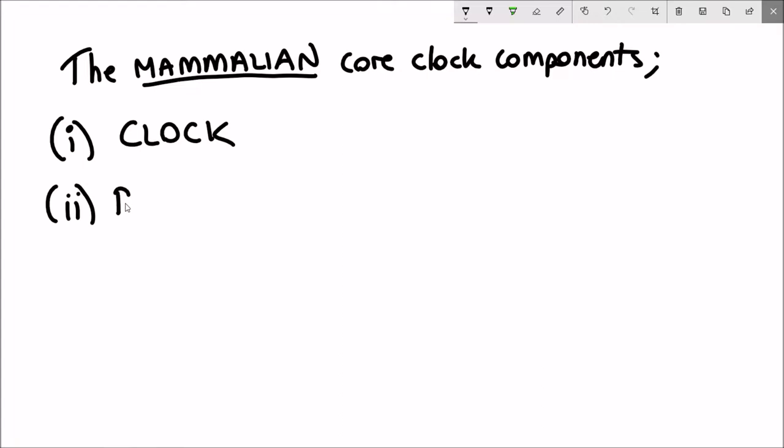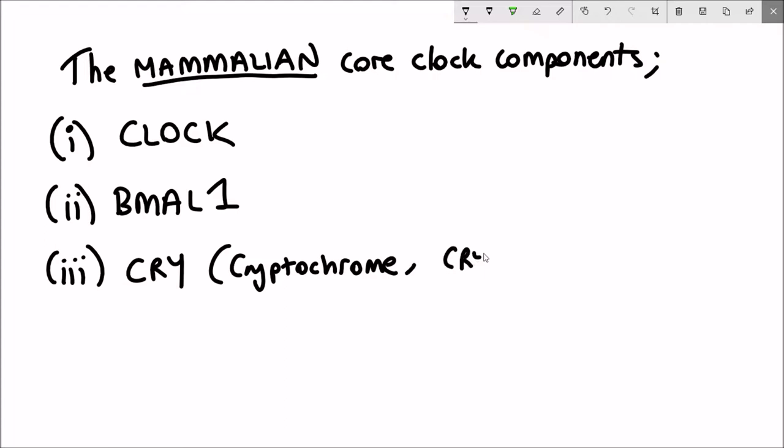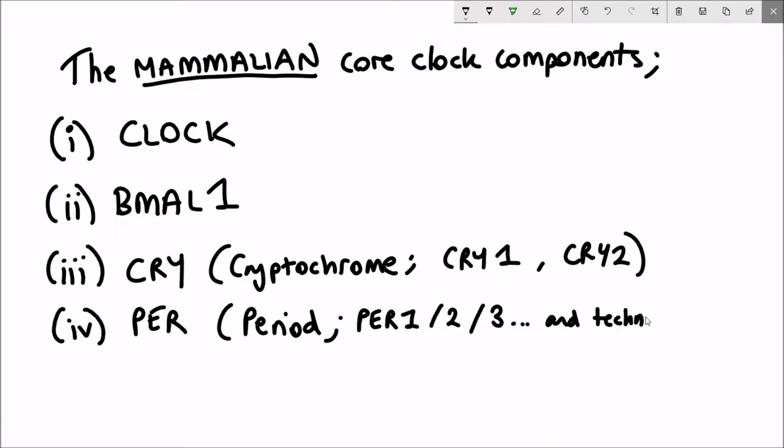The four key components to get to grips with are: CLOCK, BMAL1, CRY or cryptochrome, and PER or period. Just to add a bit to the complexity, you have CRY1 and CRY2, and there are three different copies of the period protein.